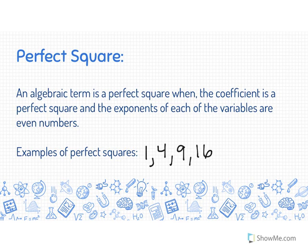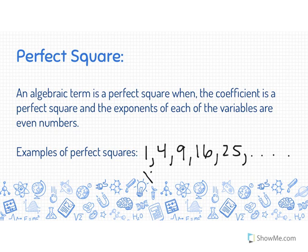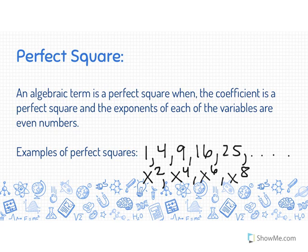4 times 4 is 16, 5 times 5 is 25, and so on — it keeps going. As for what I mean by variables having even exponents, the exponents for the variables are even numbers: 2, 4, 6, 8, and so on. Terms with even exponents like those would actually be perfect squares as well.